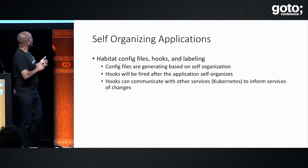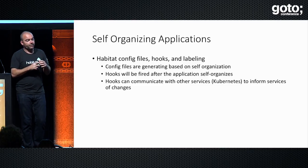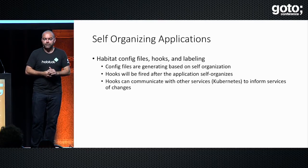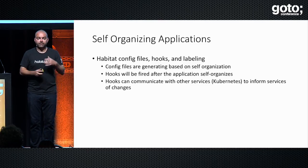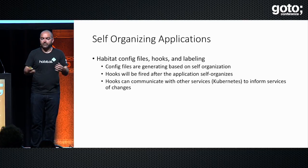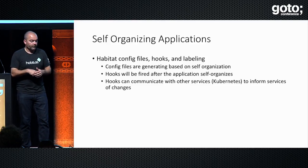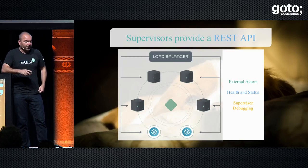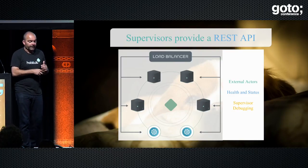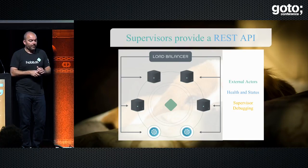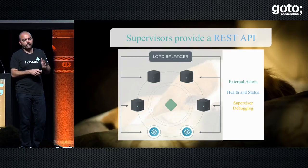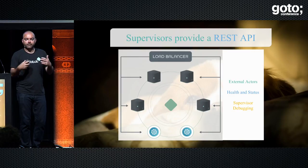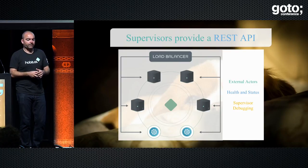When self-organization happens, you can notify other systems. In the case of Kubernetes, you can apply appropriate labels based on election results and Kubernetes can route traffic using those labels as selectors. The supervisors also provide a REST-based API to query health and status, debug supervisor state and election results, and for external actors like load balancers to query health check endpoints and remove failed instances from the pool.